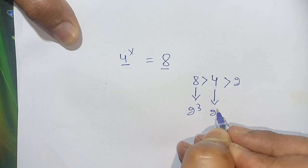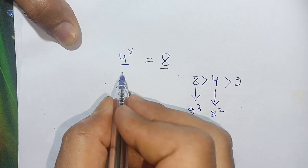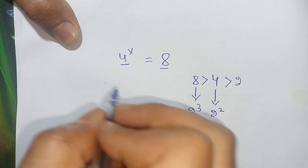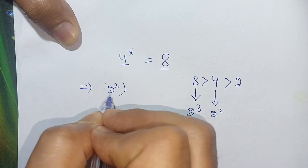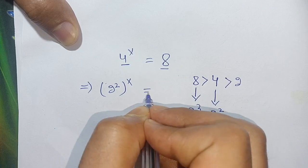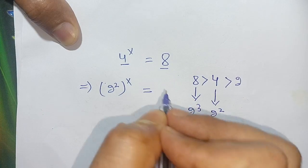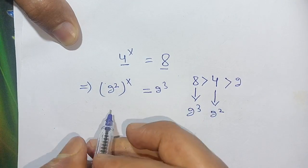Now in place of 4 we put 2^2, so we have (2^2)^x. In place of 8 we put 2^3. In the next step we have 2^(2x) = 2^3.